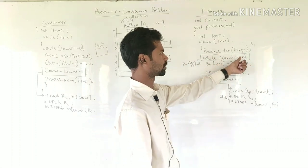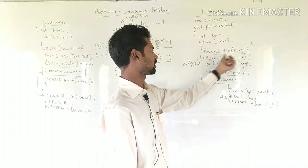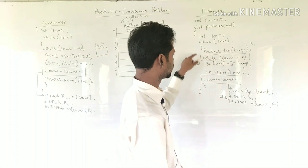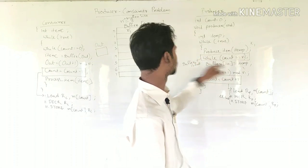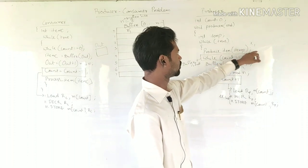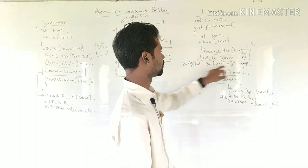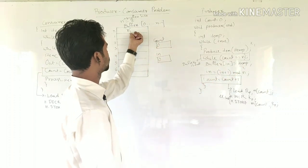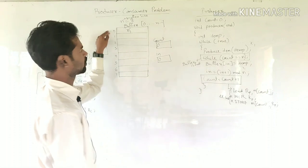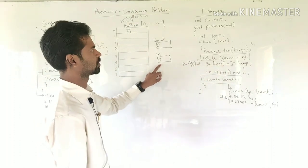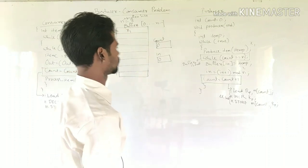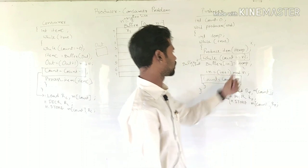If the buffer is not full, the self-loop exits and we execute the next statement: buffer[in] = item_p. Since the buffer slot is empty, x1 will be inserted. The variable 'in' is currently 0, so x1 is inserted at position 0. Then in = (in + 1) mod n.